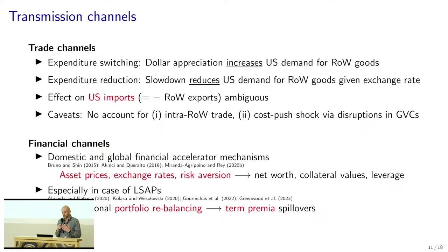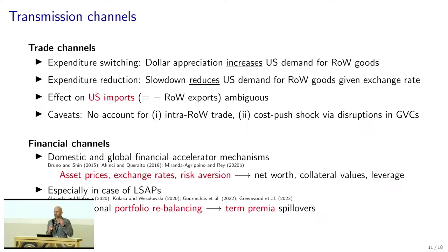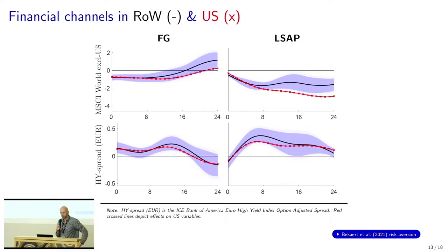Then we look at financial channels, which all revolve around domestic and global financial accelerator mechanisms. They all center on variation in asset prices, exchange rates, and risk aversion, which then give rise to variation in net worth, the value of collateral, and eventually leverage. In the context of LSAPs, there's an important transmission channel of international portfolio rebalancing. If you have investors operating in segmented markets — preferred habitat investors — then if the net supply of assets in their market changes, this will have spillovers across markets: from treasury markets to other advanced economy sovereign bond markets, manifesting in term premium spillovers.